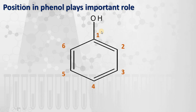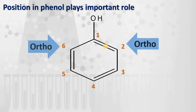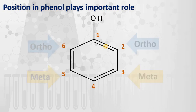Before that we must know the position of different substituents with respect to the OH group when they are attached to the benzene ring. These positions play an important role in deciding the acidic strength of phenols. The 2 and 6 positions are ortho, 3 and 5 positions are meta, and 1 and 4 positions are para.